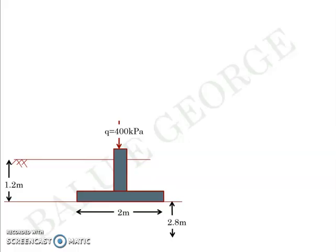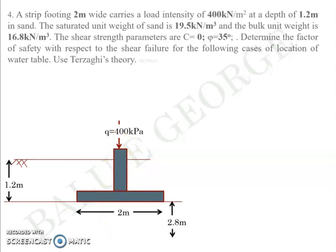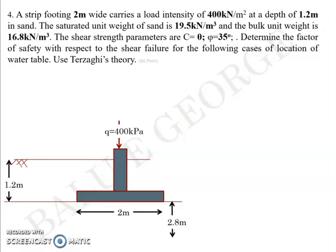Now we'll continue with numerical problems. In this question, you are given a strip footing 2 meters in width at a depth of foundation df = 1.2 meters, acted upon by a load of 400 kPa. The soil is sand with bulk unit weight 16.8 kN/m³ and saturated unit weight 19.5 kN/m³.